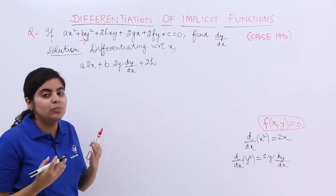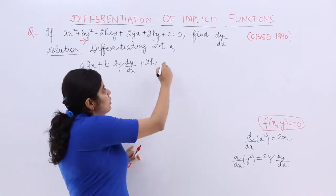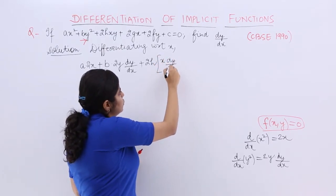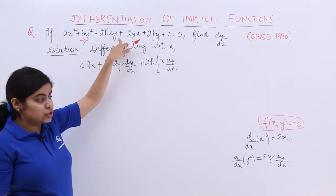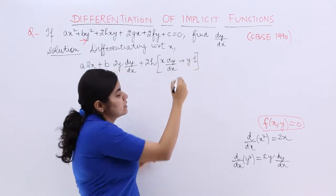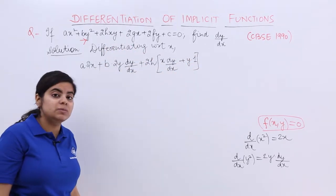Now, x and y both when you need to multiply and they are already in the u into v that is product form, so you have to apply the product rule. So it is x into differentiation of y, x into differentiation of the second term plus the second term into differentiation of first wherein the first term is x. So differentiation of x is 1 with respect to x.